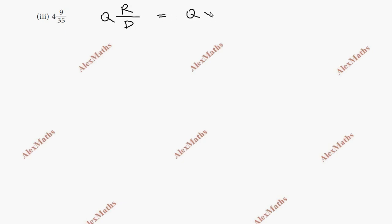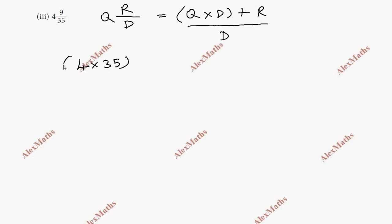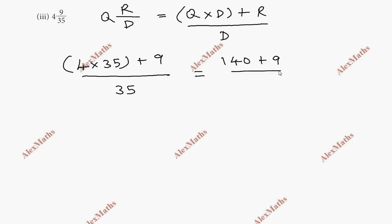We take 4 into 35 plus 9, all over 35. So 35 into 4 is 140, plus 9 gives us 149 by 35.